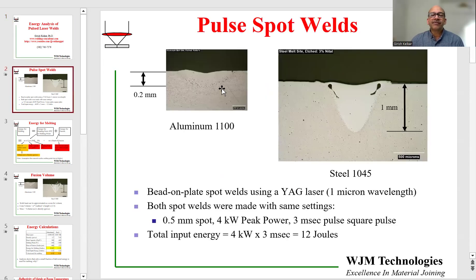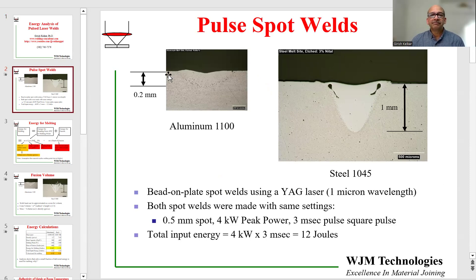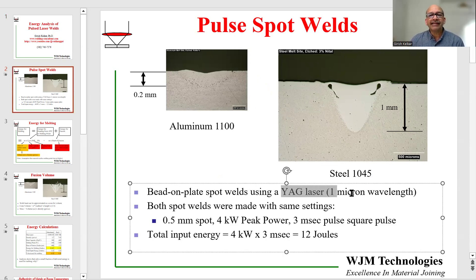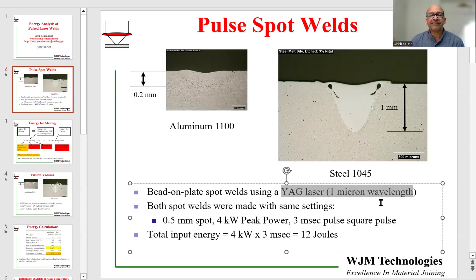For this reason, we have conducted a small test. We have used two materials for comparison: aluminum 1100, which is essentially pure aluminum, and steel 1045, which is essentially carbon steel with about 0.45% carbon. Both materials were used in a plate form, so this is not actually welds — this is actually a spot on a solid plate.